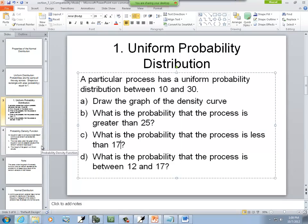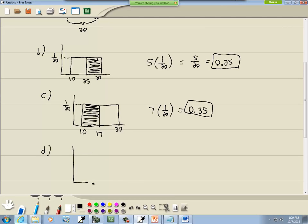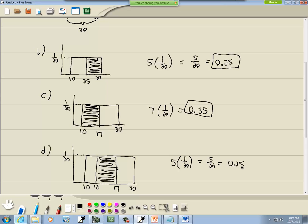And let's look at D. Excuse me. What is the probability of the process between 12 and 17? Okay, so, here's 10, and here's 30, and between 12 and 17. So, let's say that's 12, let's say that's 17. Between them is shaded between them. Like that. And that's still a rectangle, so the area of a rectangle is the length times width. So, this distance here is 5, 17 minus 12. Times our height, which is still 1 over 20. Now, it gives us 5 20ths, which is 0.25 again.